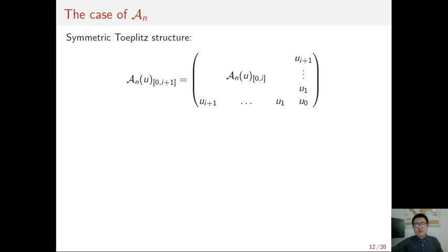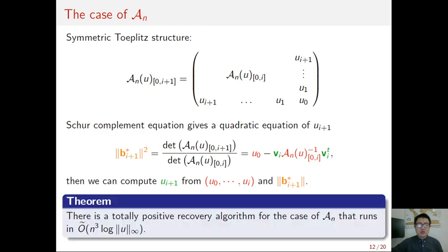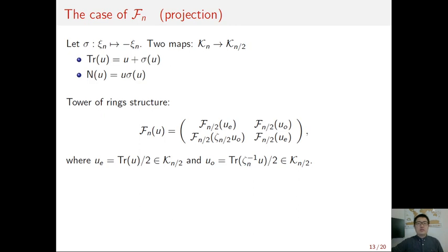For the case of power basis matrix form, we note that the leading block of the matrix form of U is actually a symmetric Toeplitz matrix. So by Schur's complement, we can build a quadratic equation of the coefficient U_{i+1}. And this implies that once we know the coefficients U_0 to U_i, together with the norm of U_{i+1}, then we can solve the next coefficient U_{i+1} by solving this quadratic equation. And this gives us a recovery algorithm of complexity O(n³).